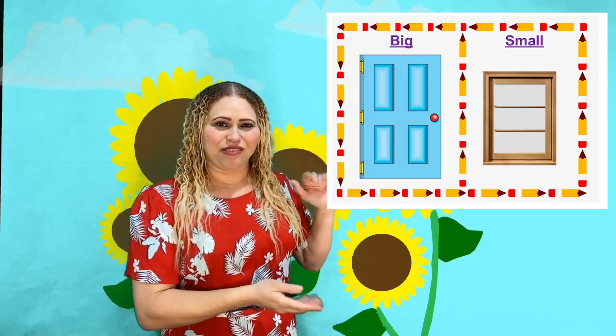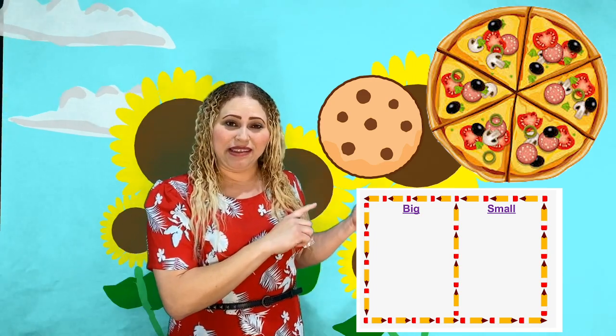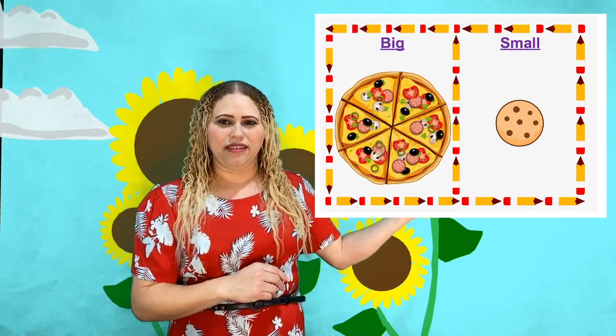Here's the next example - we see a rectangular door and a rectangular shape for a window. Which one do you think would be the big one - the window or the door? The big one would be the door and the smaller one would be the window. And one more example - here we have a circular pizza and we also have a cookie. Think about the sizes of those two. Which one would go under the big category - the pizza or the cookie? The pizza would go in the big and the cookie in the small. Thank you so much for joining me today. See what objects or things you can find at home that you can classify and sort either by shape or by size. Put it in the comments - see you guys next time!